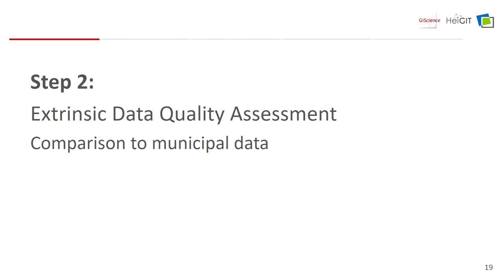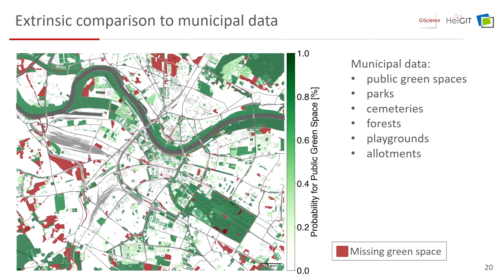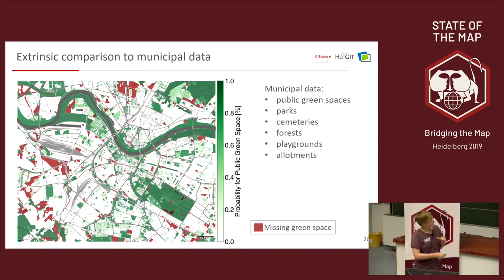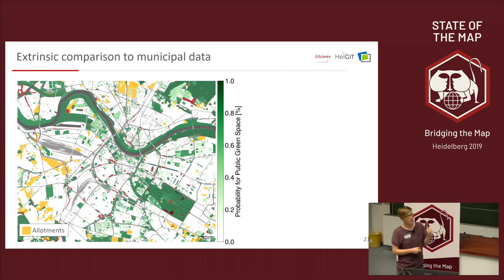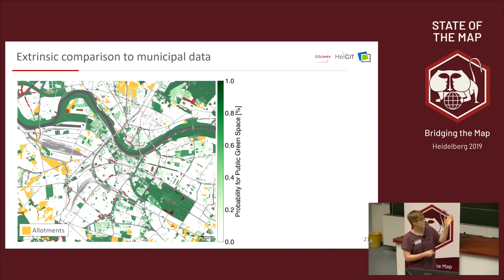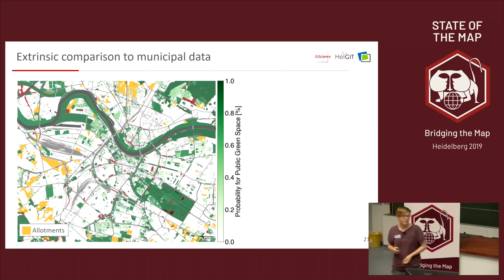Now we need to know how good the data actually is. The first step is comparing it to an external dataset. We got municipal data from Dresden, extracting parks, cemeteries, playgrounds, allotments, and forests — those relevant for public green spaces — and performed a basic intersection. Red areas are things missing in OpenStreetMap. The allotments had a high degree of NDVI uncertainty, so they're not extracted from OSM, which is actually a problem of methodology rather than OSM itself.